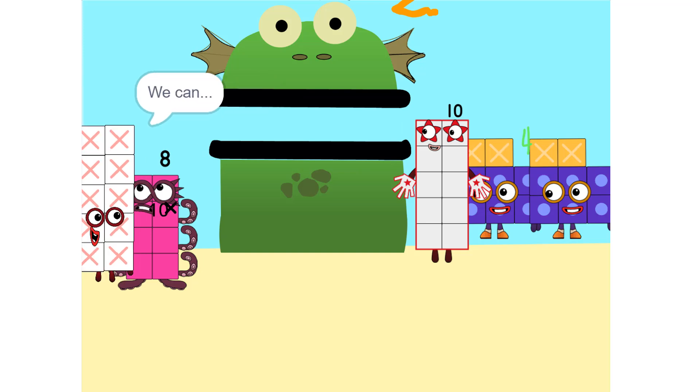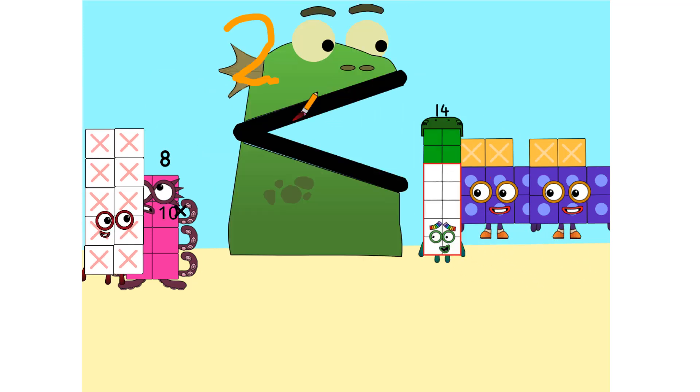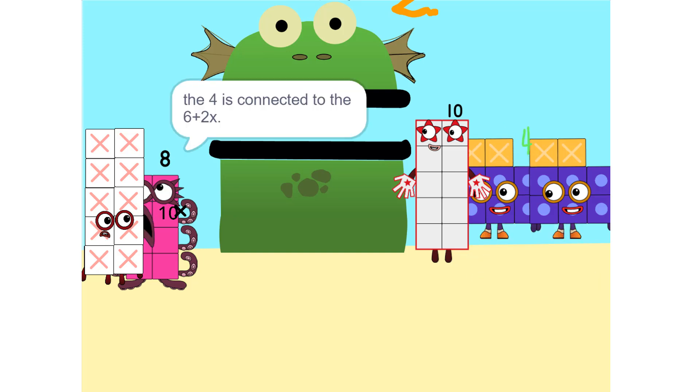I see something. We can add these. Why did that happen? Because the 4 is connected to the 6 plus 2x. So it's like adding apples and oranges. You can't. So what do we do?